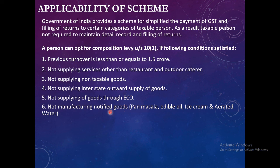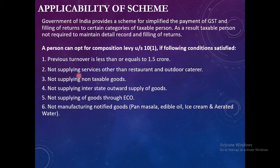Also, if a person is manufacturing notified goods, they cannot opt for the composition scheme. To repeat the conditions: previous year turnover must be less than 1.5 crore; no service supply other than restaurant and outdoor catering; no supply of non-taxable goods; no inter-state supply; no supply through ECO; and no manufacture of notified goods. As per a new amendment, a person is allowed to supply some services up to a certain limit.